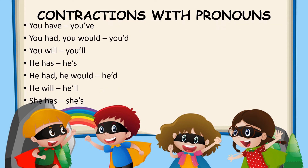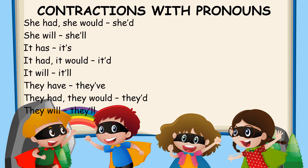You have — You apostrophe VE. You had or you would — You apostrophe D. You will — You apostrophe LL. He has — He apostrophe S. He had or She would — She apostrophe D. She will — She apostrophe LL. It has — It apostrophe S. It had or it would — It apostrophe D. It will — It apostrophe LL. They have — They apostrophe VE. They had or they would — They apostrophe D. They will — They apostrophe LL.